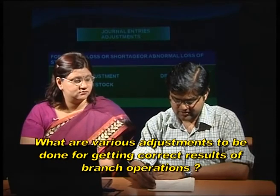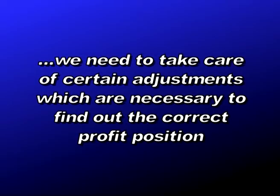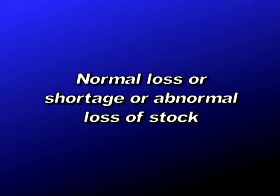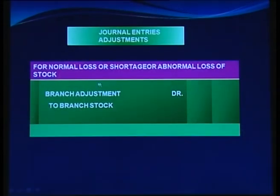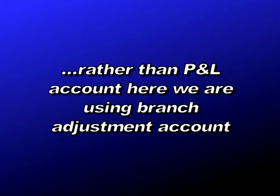What are the various adjustments needed to get correct results of branch operations? When finalizing branch accounts in the head office books, certain adjustments are necessary. For normal loss, shortage, or abnormal loss of stock: Branch Adjustment Account debit to Branch Stock — the balancing figure in branch stock reflecting normal loss or shortage is transferred to branch adjustment, which acts as the profit and loss account.